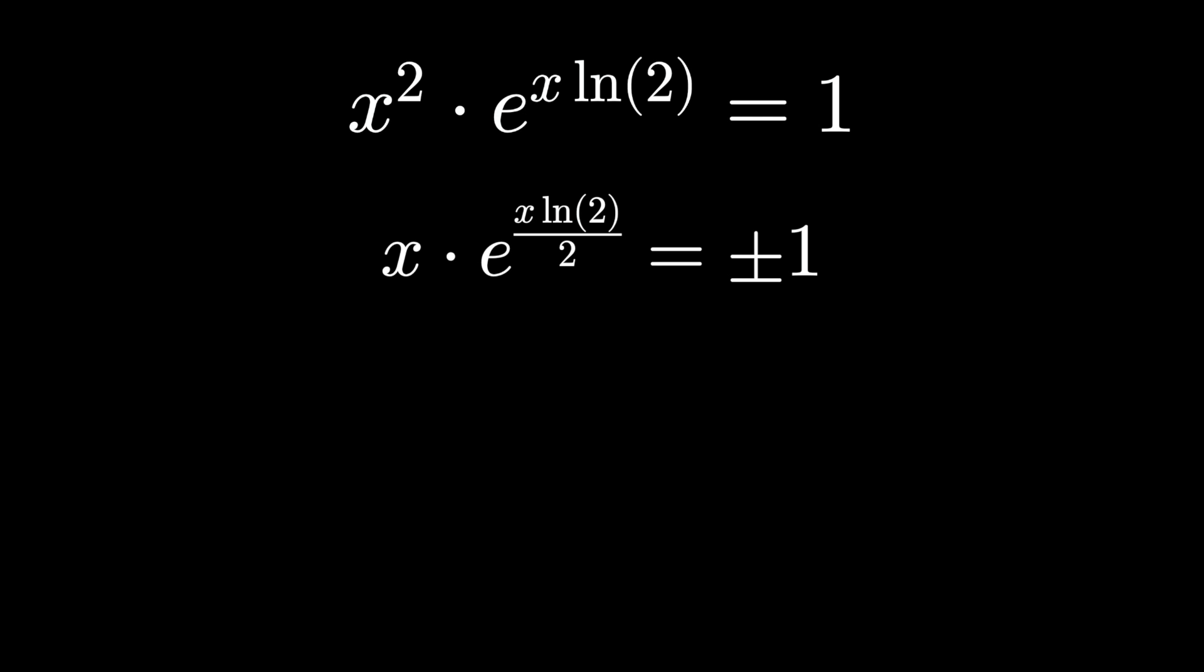We're getting very close. The only difference between the form that we're looking for, x e to the x, and what we have is this ln 2 over 2. Otherwise, we have that. So, let's just multiply both sides of our equation by ln 2 over 2.